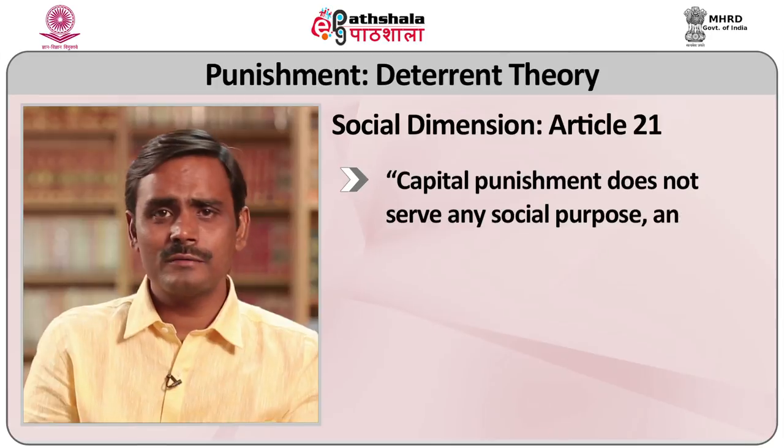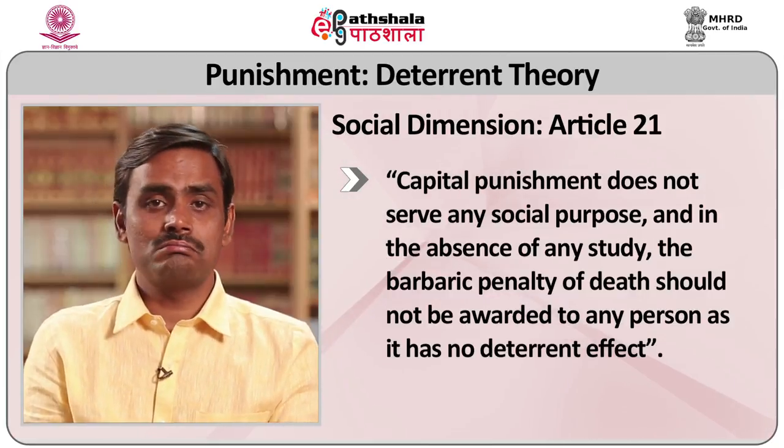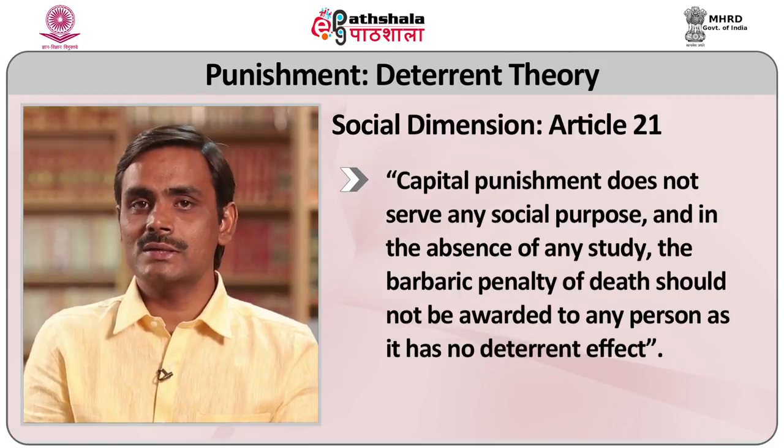In the long run, it leads to a situation where one observes a habitual obedience at large to the laws that prescribe certain acts by way of committing punishment. However, it has been argued by many that it is debatable how far punishment acts as a deterrence among the people in any given society. For example, in Sassi Nair versus Union of India, one of the arguments put forth challenging the death penalty on the ground of being violative of Article 21 of the Constitution of India was that capital punishment does not serve any societal purpose, and that the barbaric penalty of death should not be awarded to any person as it has no deterrent effect.